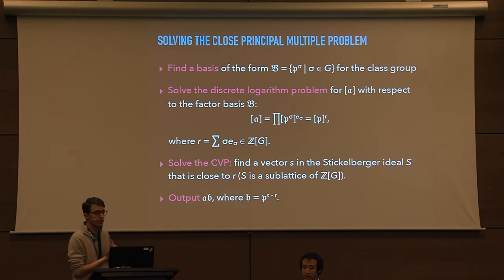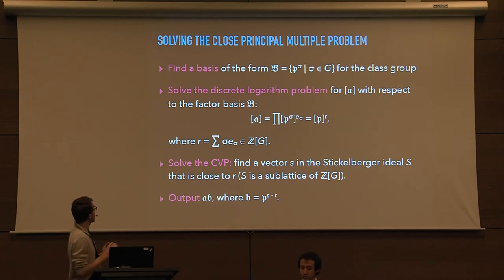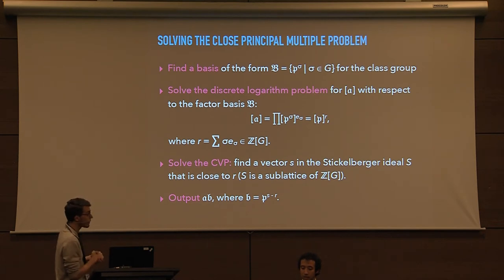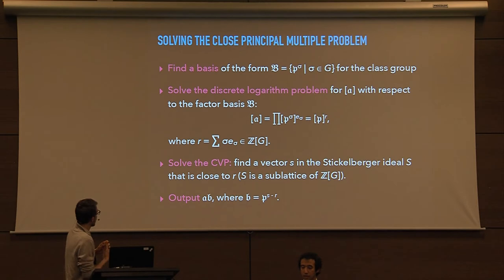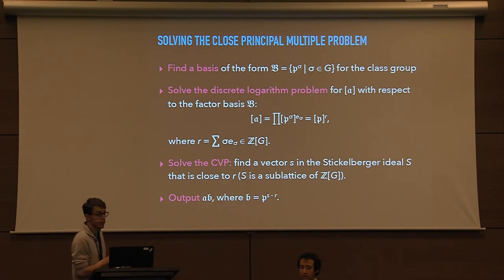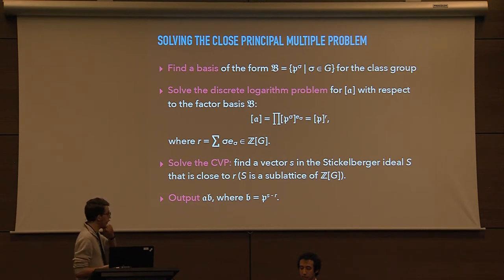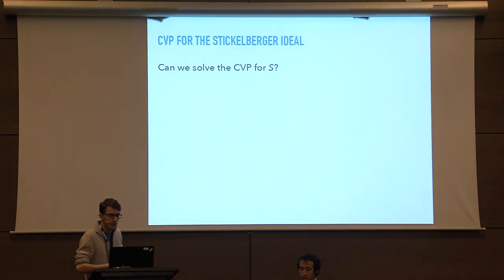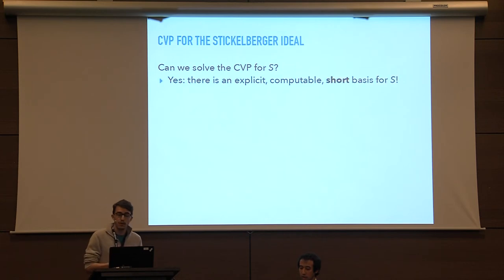Here is the summary of the algorithm. First, find a factor basis of the correct form — the Galois orbit of one ideal P. Then solve the discrete logarithm problem for the class of A with respect to the factor basis B, expressing A as a power of P with an exponent R in the group ring. Then solve the closest vector problem: find a vector S in the Stickelberger ideal that is close to R. Finally, choose B as P to the minus of S minus R and output the product AB. We know an explicit, computable, and short basis for the Stickelberger ideal, which allows solving the CVP.